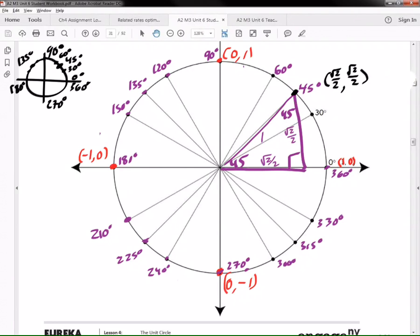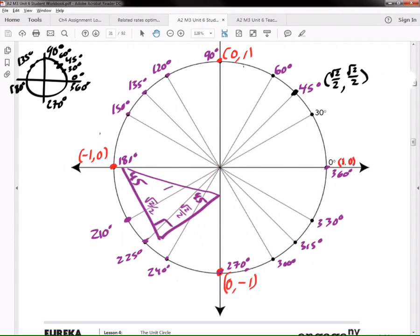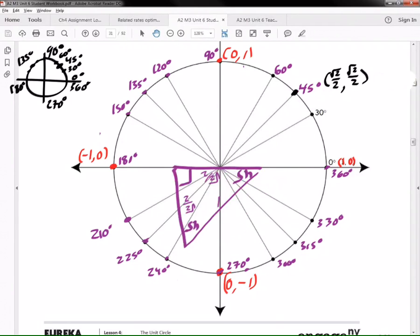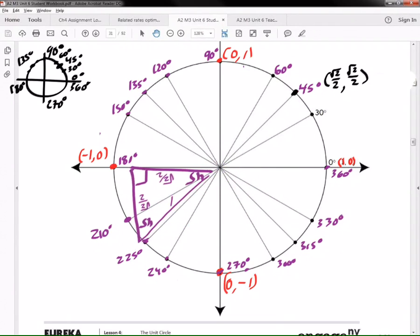We can also take that triangle and we can go to the other quadrant. Check this out. I can go to... which quadrant can I go to? I can go to this quadrant right here. Let's go to quadrant three. I can't take my triangle and flip it upside down, but you can. You can flip your triangle upside down and you can do it in quadrant two. But look, I put my triangle right here. So now I know the coordinates of 225.